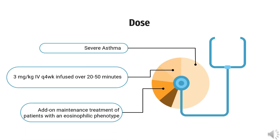How to use Reslizumab: For asthma, as add-on maintenance treatment of patients with an eosinophilic phenotype. For severe asthma, the dose is 3 mg per kg every 4 weeks, infused over 20 to 50 minutes.